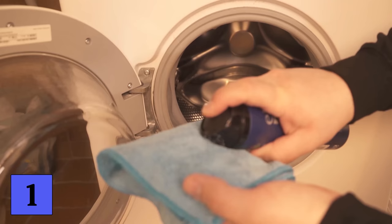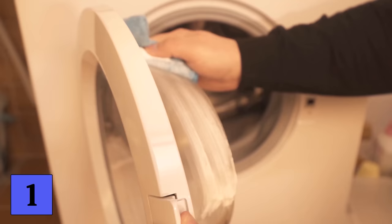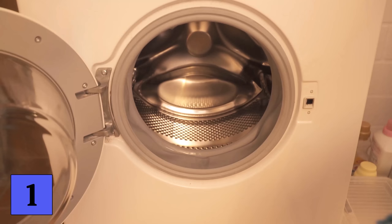You can even clean the eye of the washing machine with it. Just put some shaving foam on a cloth and start wiping the inside of the glass door. You can also leave it on for 10 minutes after spraying it on, then wipe it off and you will see that the door is really clean again.